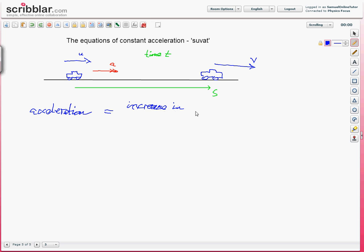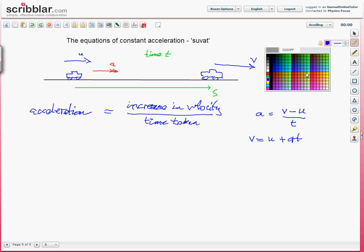Well, acceleration is increase in velocity divided by time taken. Writing this out as an equation gives us a equals increase in velocity, which is the difference between the final and the initial velocities over time taken. This is normally rearranged and written v equals u plus at. That is equation one.